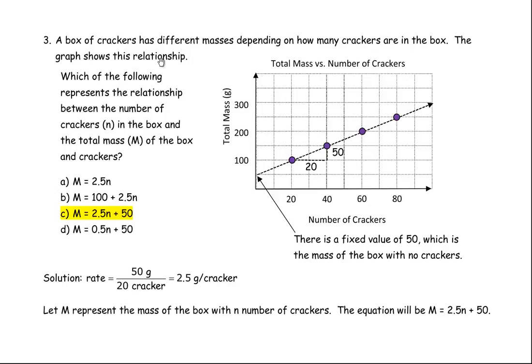The graph shows this relationship. You're asked which of the following represents the relationship between the number of crackers N in the box and the total mass M of the box and crackers. So M represents the mass of the box with the crackers in it, and N is how many crackers are in the box. So you're given four equations here and asked to find which one is the correct one.